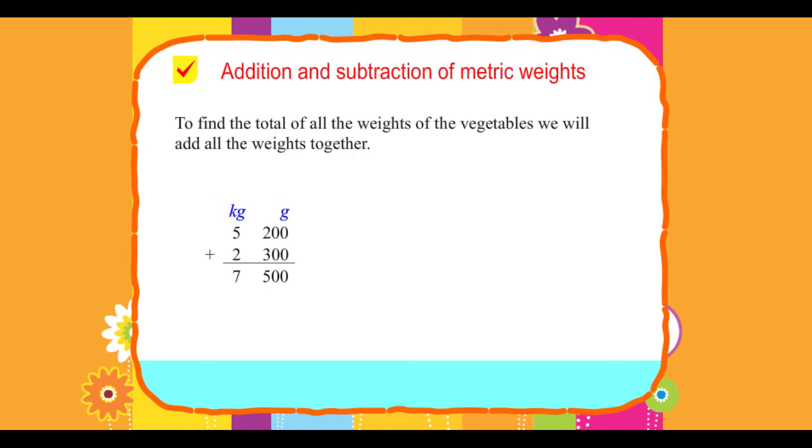kg grams: 5 200 plus 2 300 equals 7 500. 7 kg 500 grams is the total weight of the vegetables that Anjali bought.